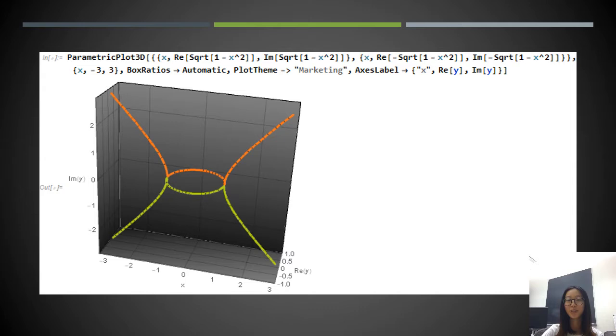Of course, my drawing is ugly. So I have also drawn on Mathematica, which also shows the feature: vertical, horizontal, vertical.